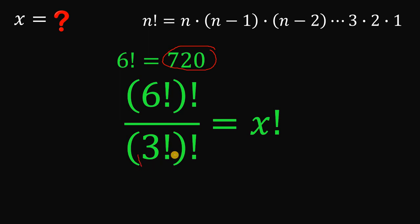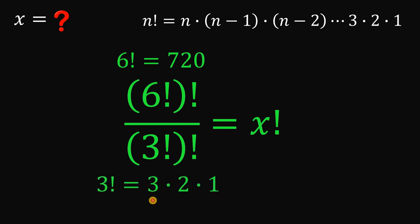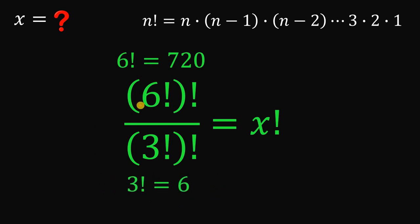Now how about 3 factorial? Based on the definition, 3 factorial is equivalent to 3 times 2 times 1, which gives us a value of 6. Therefore, we can replace 6 factorial with 720 and replace 3 factorial with 6, since the value of 3 factorial equals 6.